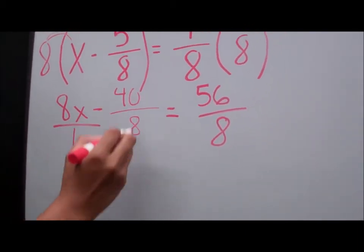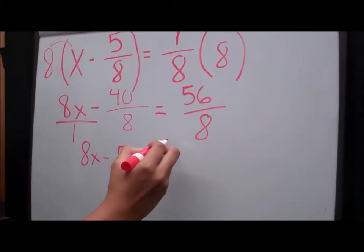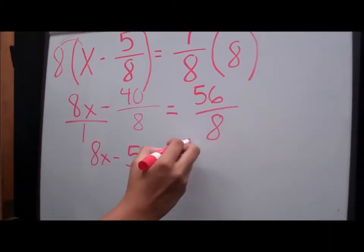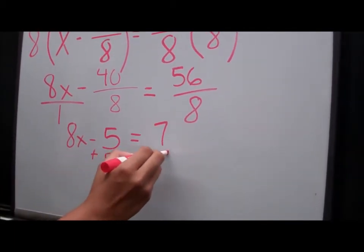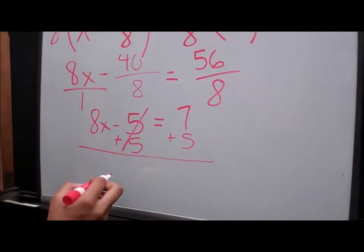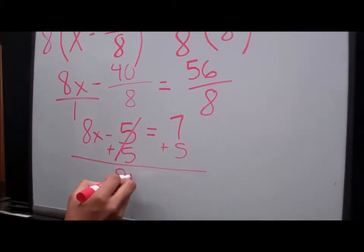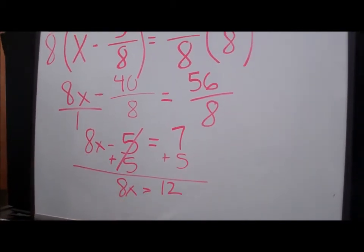Now we bring down the 8x and then you divide 40 by 8, and that equals 5. And then you divide 56 and 8, and that equals 7. And now you do the inverse operations and add 5 to each side. And now there's 8x and 12 left.